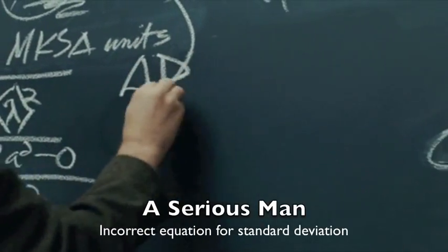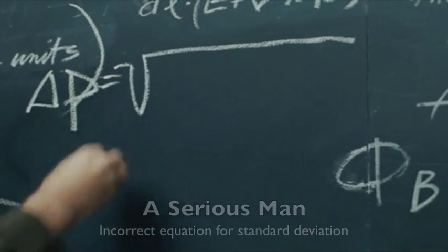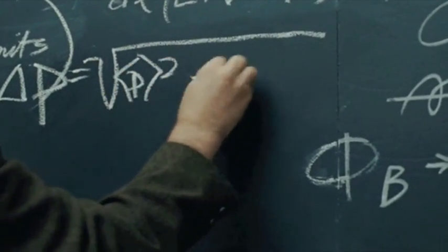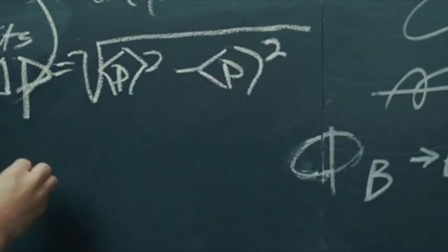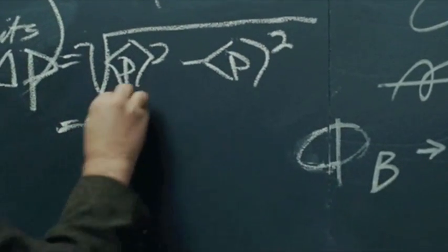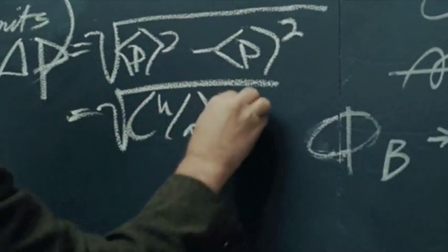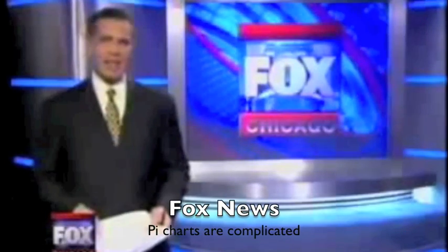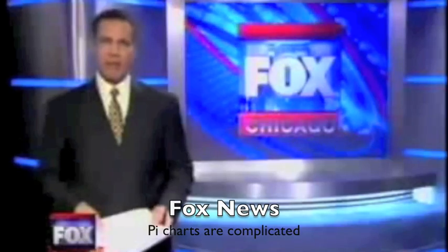And also, the uncertainty in p is equal to the square root of bracket p squared minus bracket p squared, which also equals the square root of h over a squared.